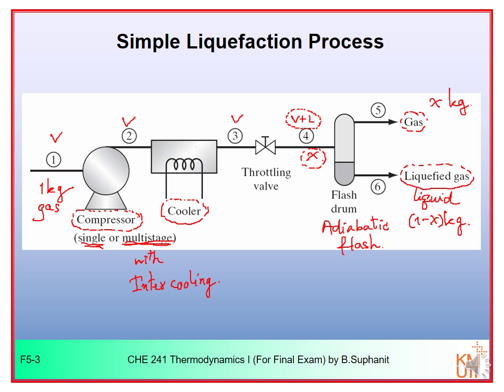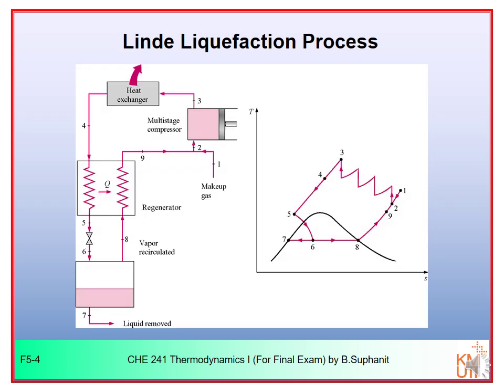We can modify the simple liquefaction system to be more efficient. The more efficient process is called the Linde liquefaction process. In the Linde liquefaction process, we make use of the gas from the flash drum — instead of returning that gas to a storage tank, we use it to cool our compressed gas further.